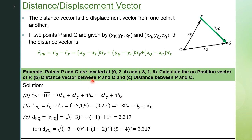The distance vector from P to Q is found by subtracting the coordinates of P from Q: (−3 − 0) = −3 along x, (1 − 2) = −1 along y, (5 − 4) = 1 along z. This gives the distance vector −3 ax-cap − 1 ay-cap + 1 az-cap. To find the distance between P and Q, we find the magnitude: √((−3)² + (−1)² + 1²) = 3.317. Alternatively, you can use the distance formula by subtracting and squaring each coordinate difference.